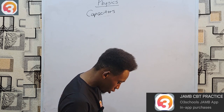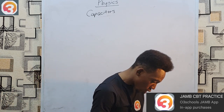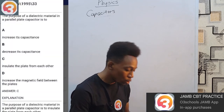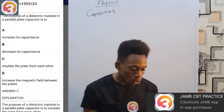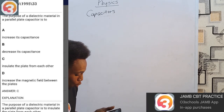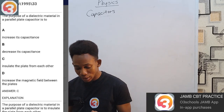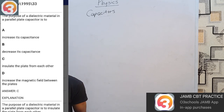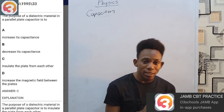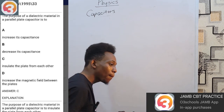Our first question is from 1995, question 33 — you can search it on your own JAMB app. The question says: 'The purpose of a dielectric material in a parallel plate capacitor is to:' A) increase its capacitance, B) decrease its capacitance, C) insulate the plates from each other, D) increase the magnetic field between the plates. Many of us would start analyzing between options A and B.